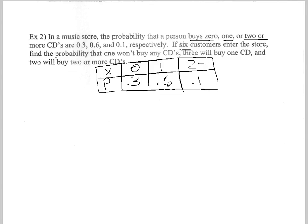If six customers enter the store, find the probability that one won't buy any CDs, three will buy one CD, and two will buy two or more CDs. Here's my X values, here's my P values.